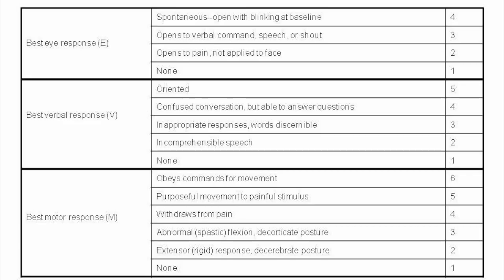The Glasgow Coma Scale is scored between 3 and 15, 3 being the worst and 15 the best. It is composed of three parameters: best eye movement (E), best verbal response (V), and best motor response (M). The components should be recorded individually — for example, E2, V3, M4 results in a GCS score of 9. A score of 13 or higher correlates with a mild brain injury, 9 to 12 with a moderate brain injury, and 8 or less represents severe brain injury.